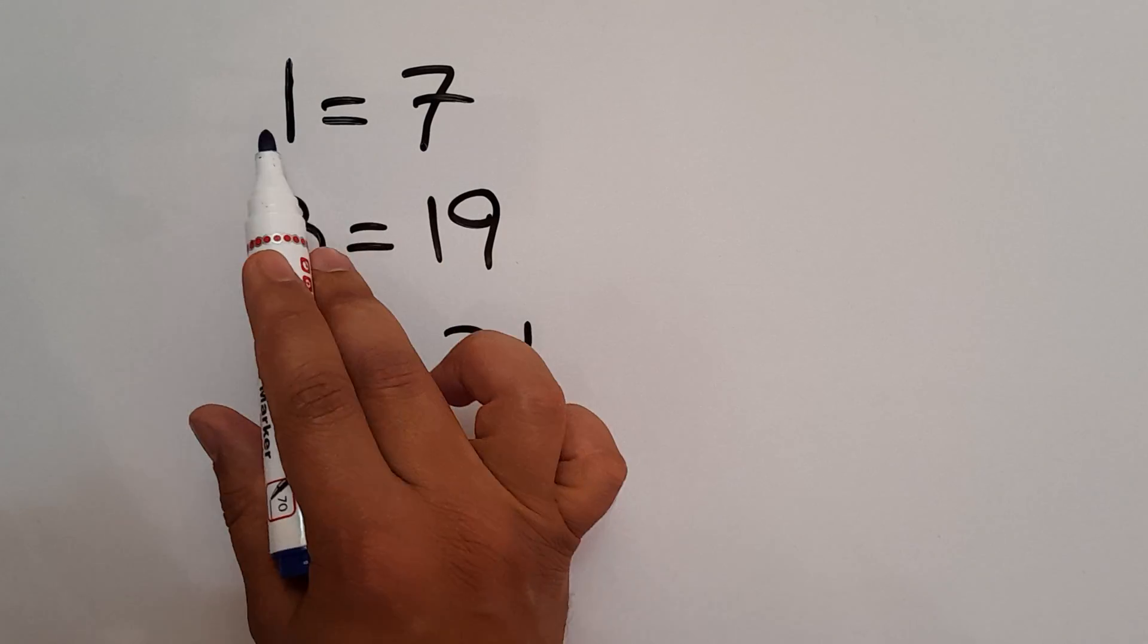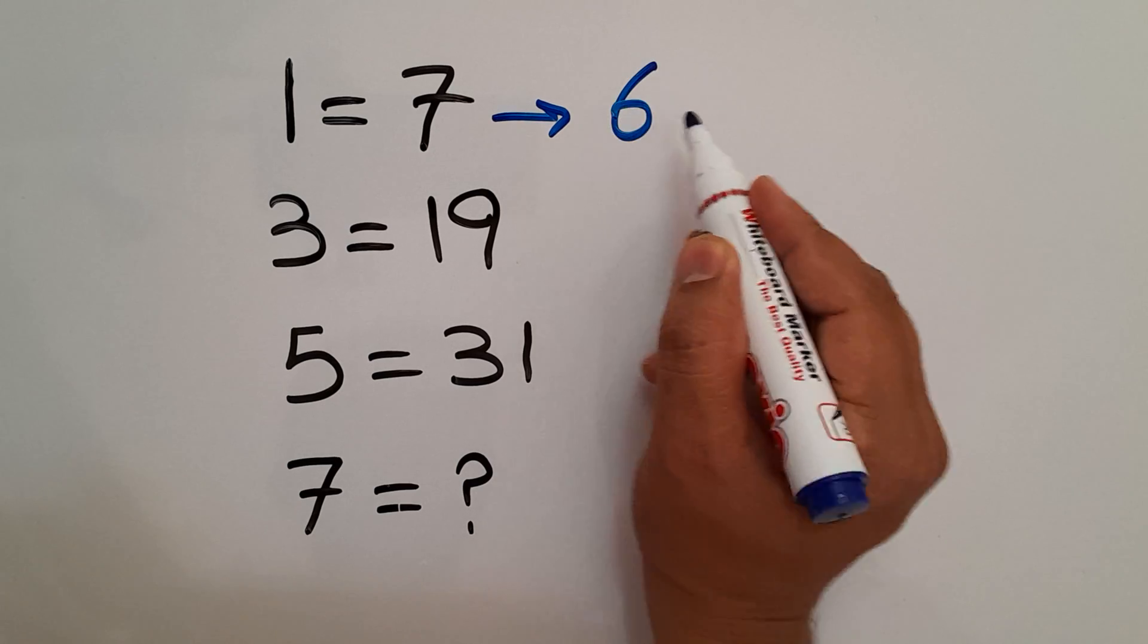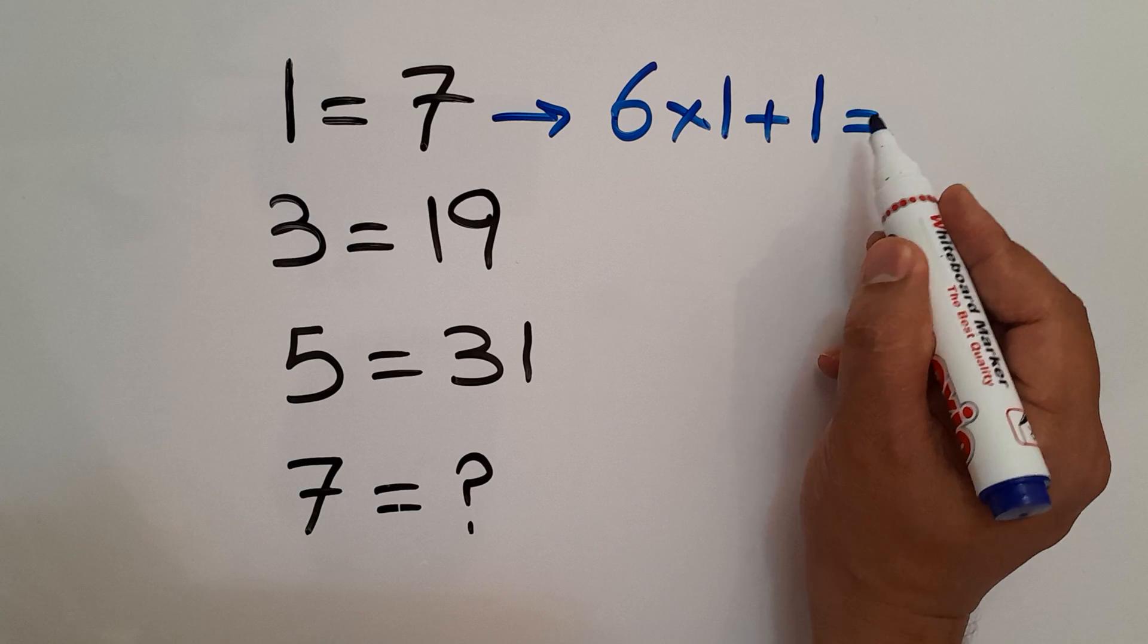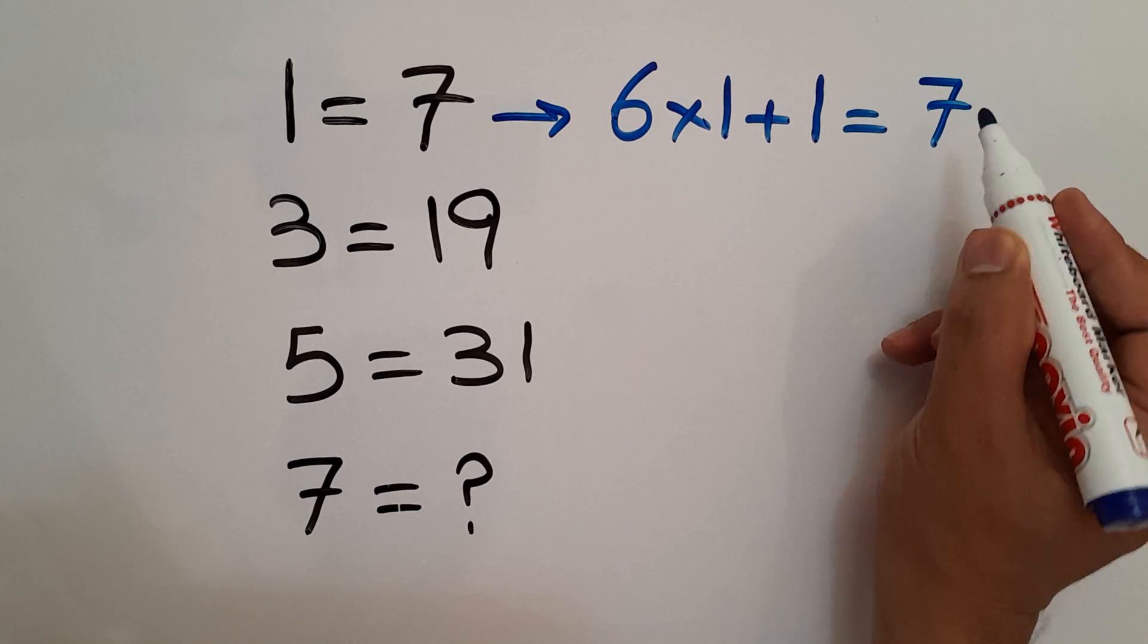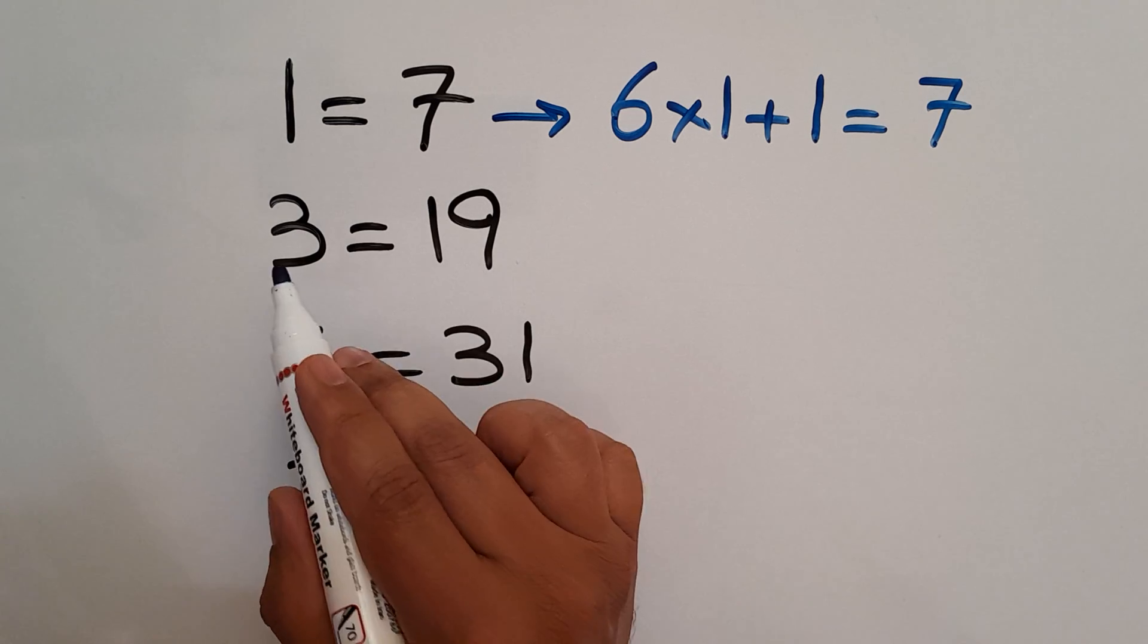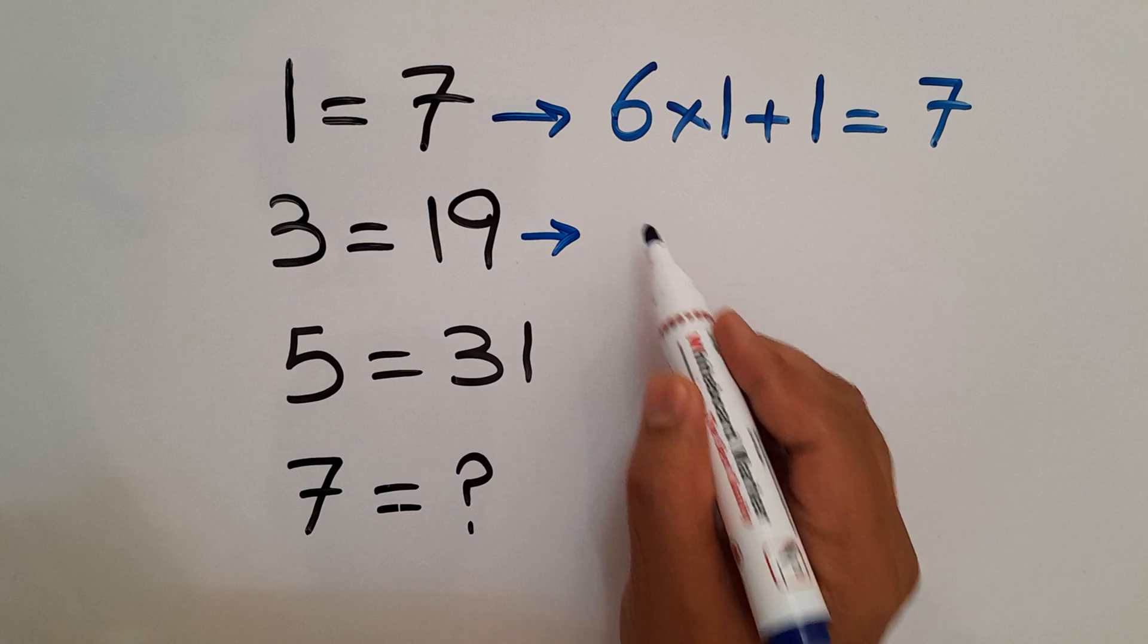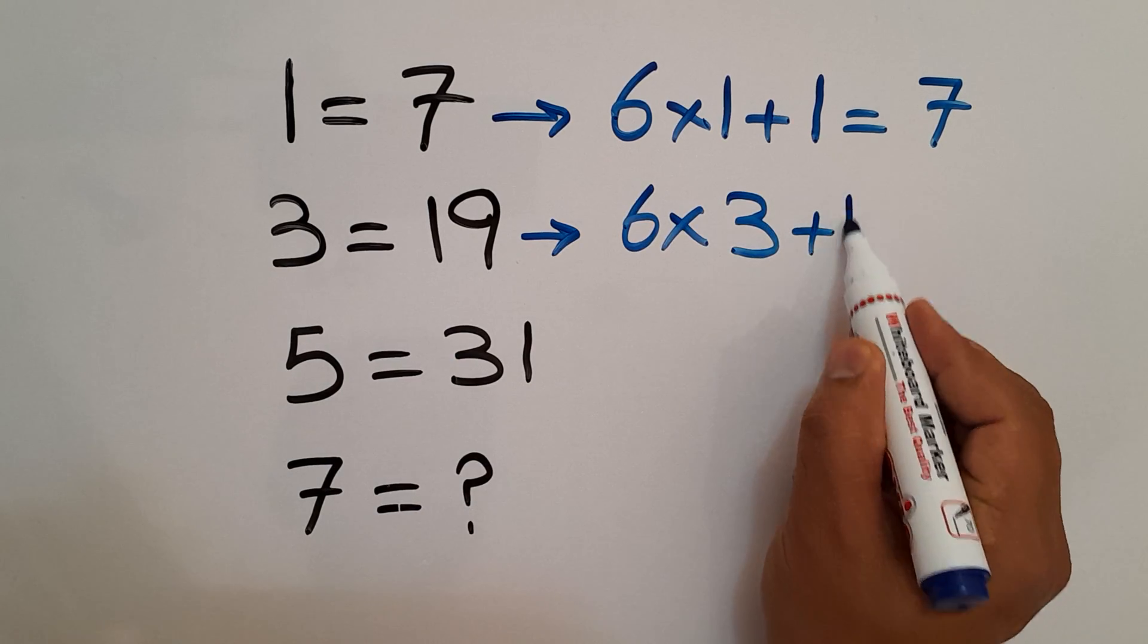In the first line we have 1 and 7. 6 times 1 plus 1 equals 6 plus 1, which equals 7, the right hand side number. In the second line we have 3 and 19. 6 times 3 plus 1 will be equal to 18 plus 1, which equals 19, the right hand side number.